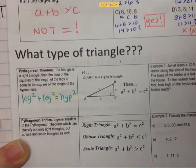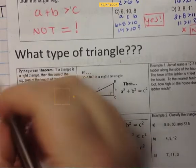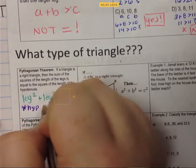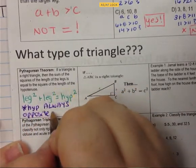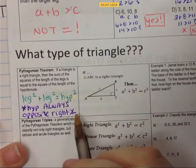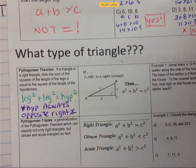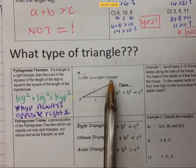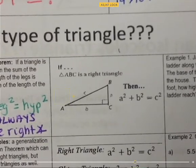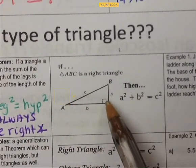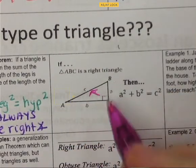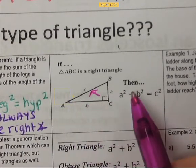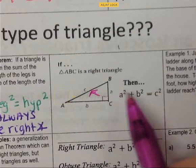Your hypotenuse is always opposite the right angle, and it should always be your largest side because it's across from the largest angle in a right triangle. So if triangle ABC is a right triangle — we can see the right angle box — we have legs A and B and hypotenuse C, which is across from the right angle. So: A squared plus B squared equals C squared.